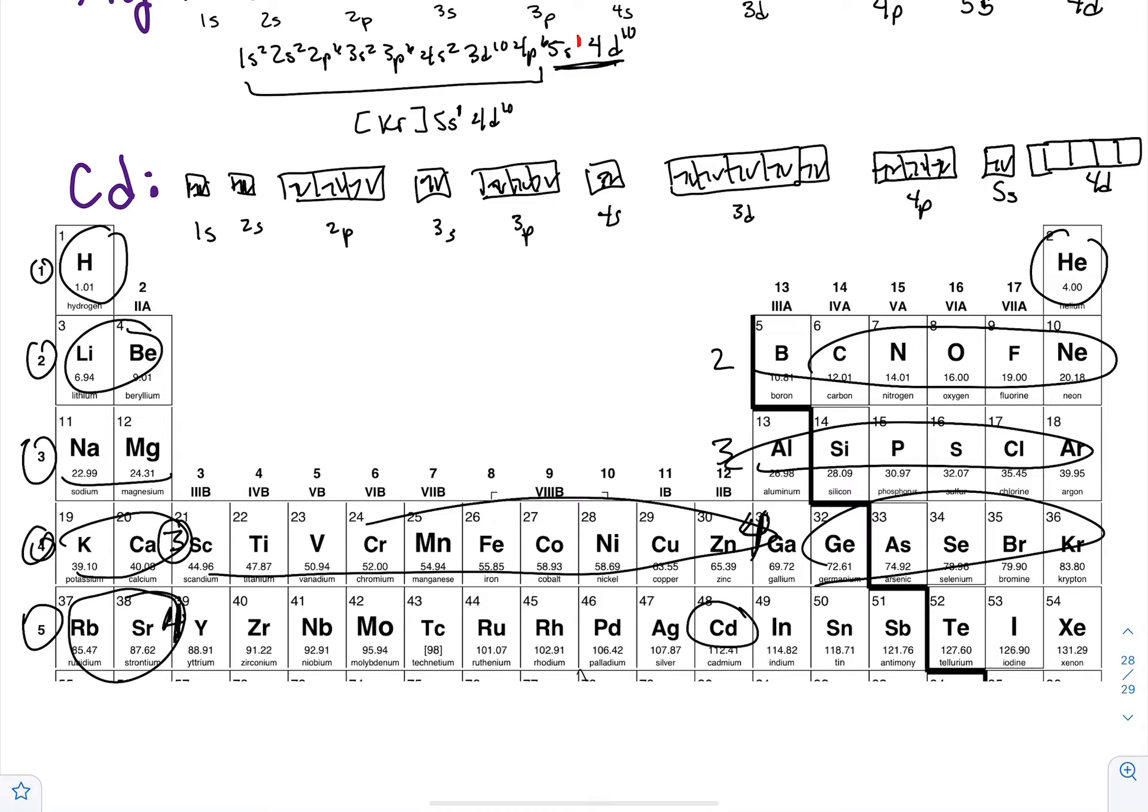And then finally, this row jumps back to the four D's. And if you count all the way over, it's four D's, ten.